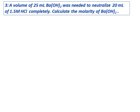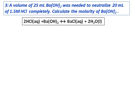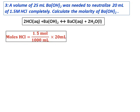A volume of 25 milliliters of barium hydroxide was needed to neutralize 20 milliliters of 1.5 molar HCl completely. Calculate the molarity of barium hydroxide. In this neutralization reaction, you can see that the base is dibasic — it has 2 OH ions. As usual, we calculate the moles of hydrochloric acid and I get that as 0.03 moles.